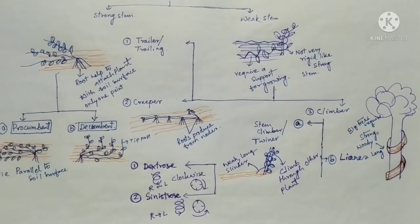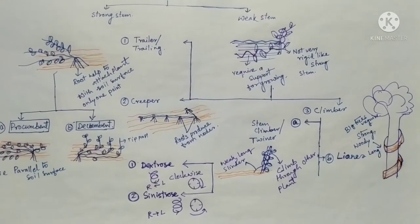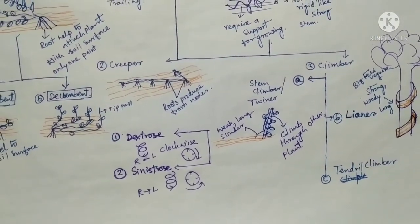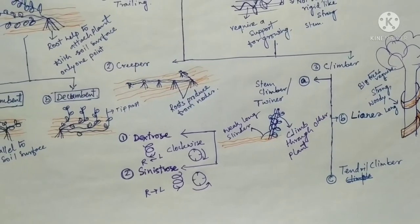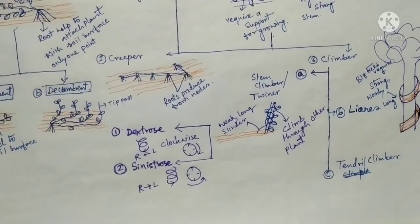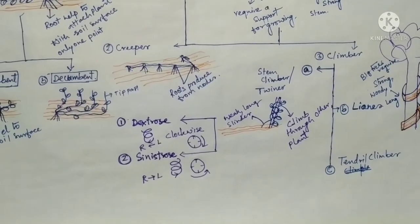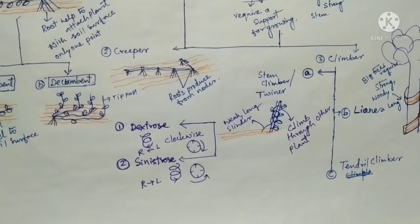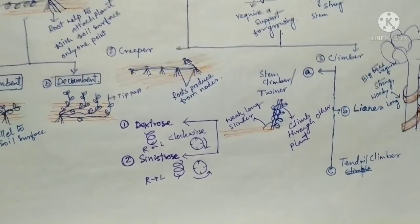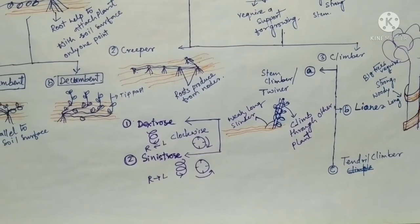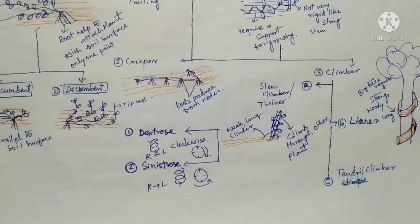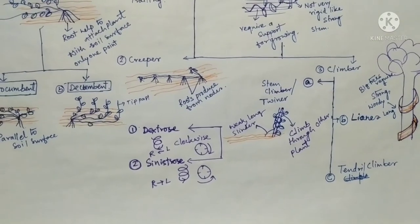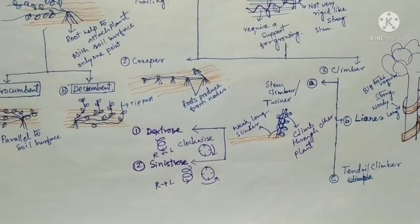The next type is tendril climber. When a climber plant produces a spiral-like, thread-type organ through which it climbs to other plants or objects, this type of climber is known as a tendril-type climber. In the case of tendril climbers, many modifications are present, and according to their modification, it is divided into many types.